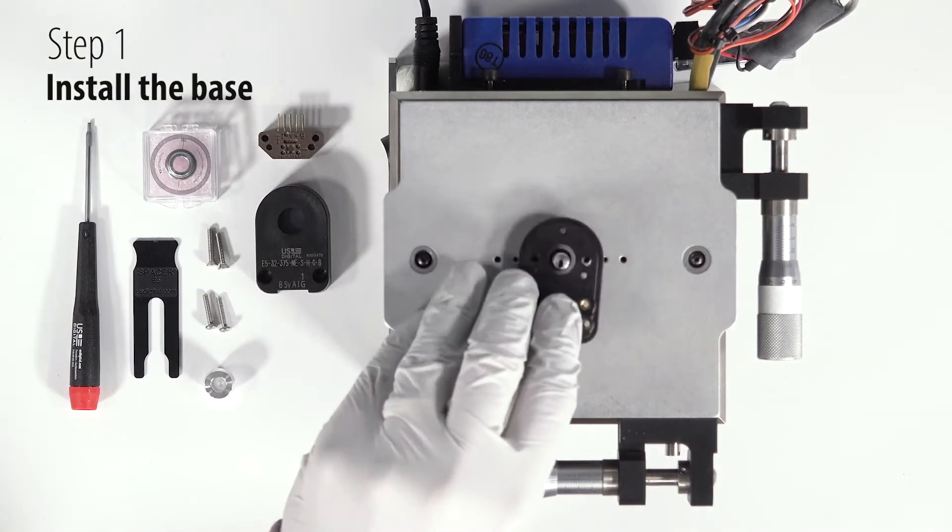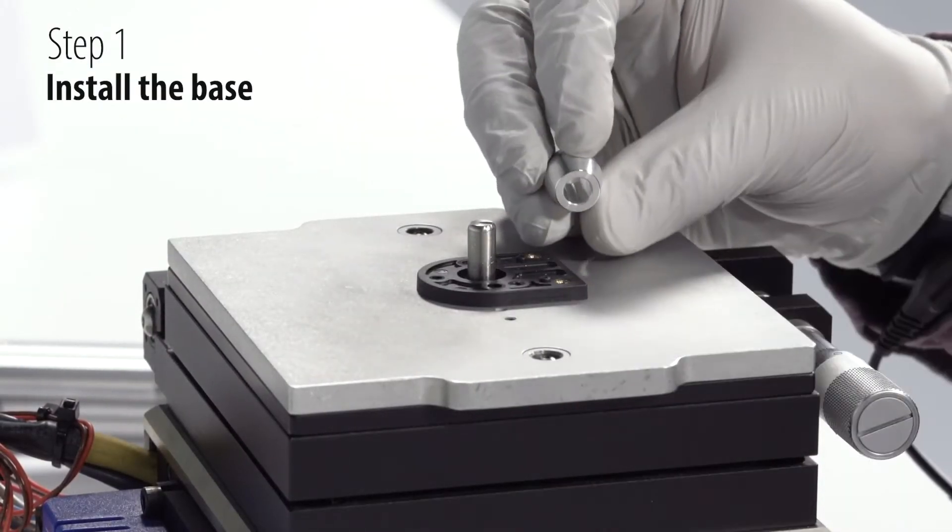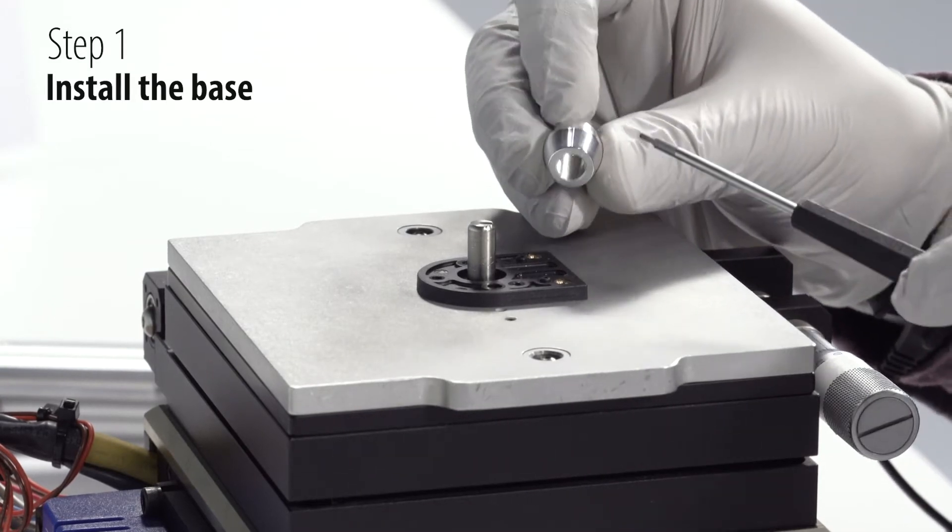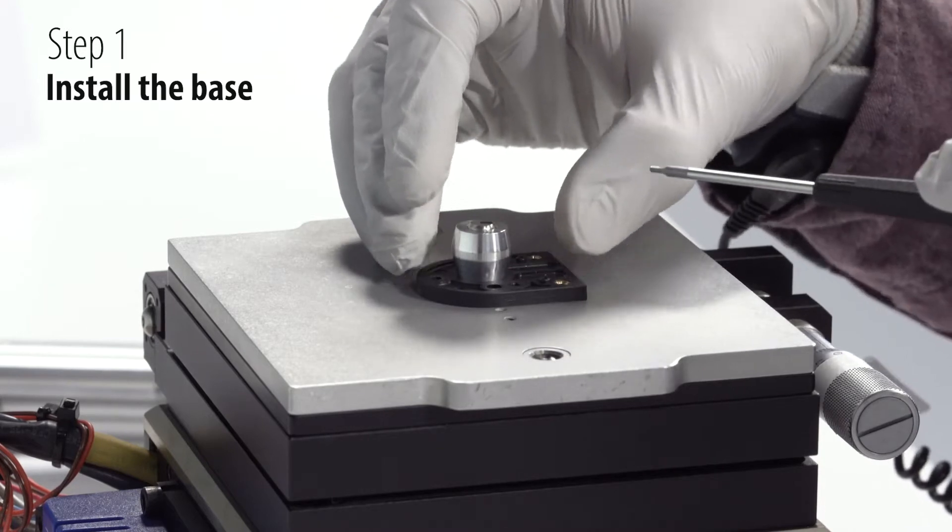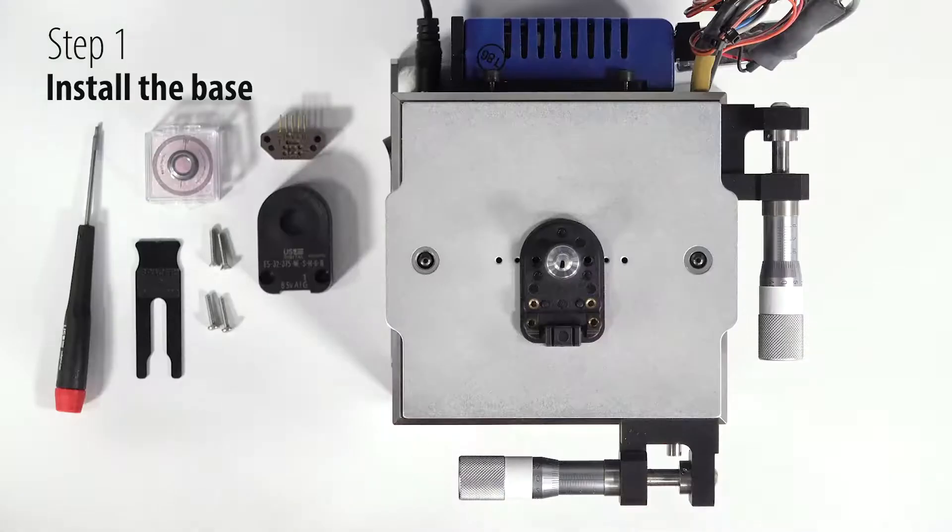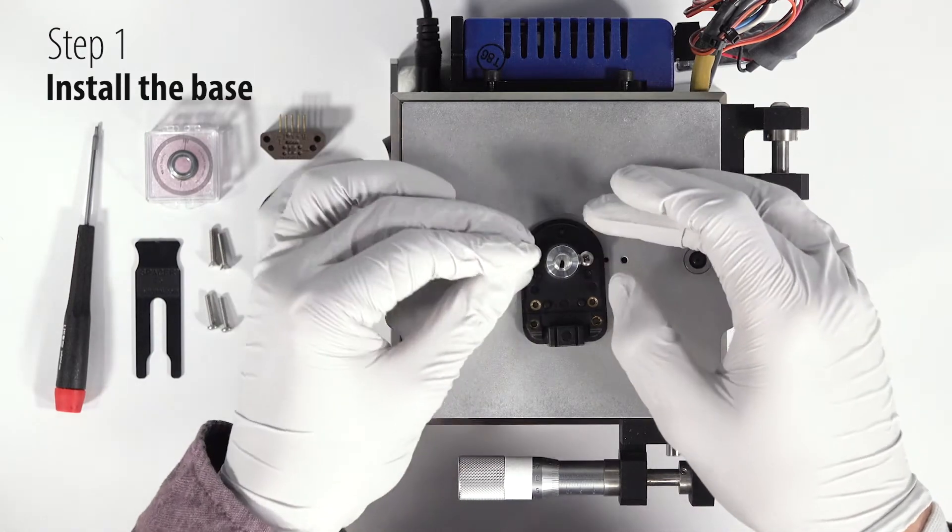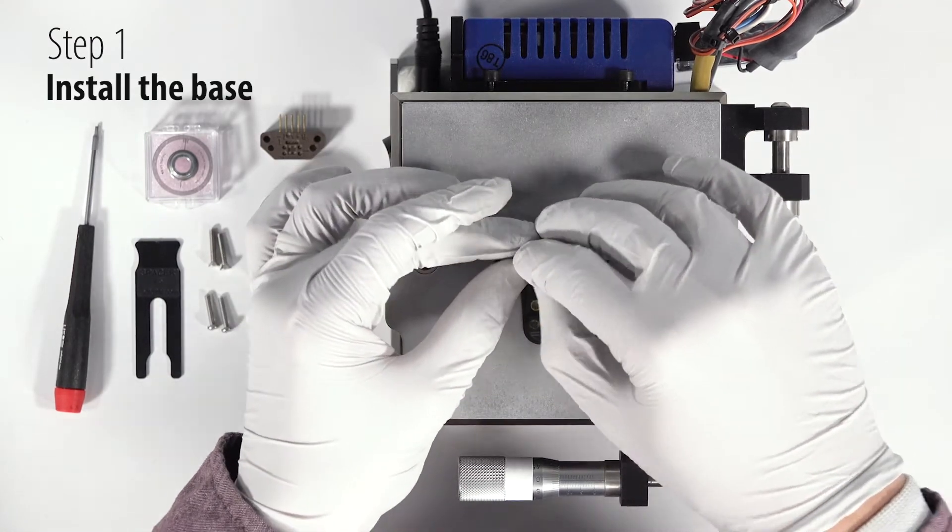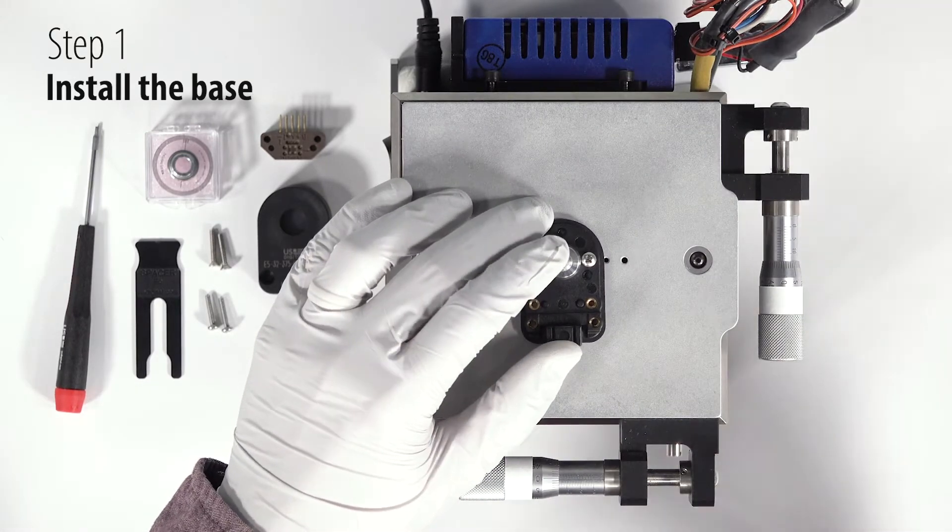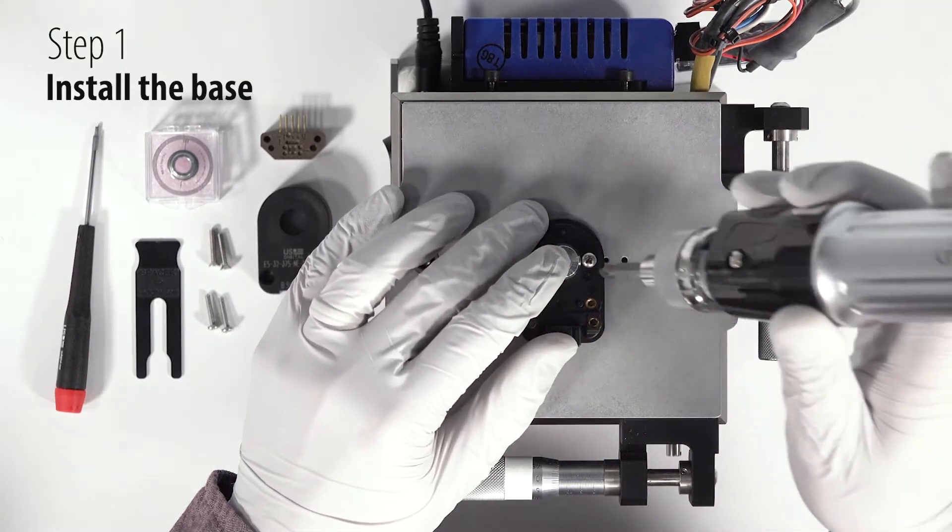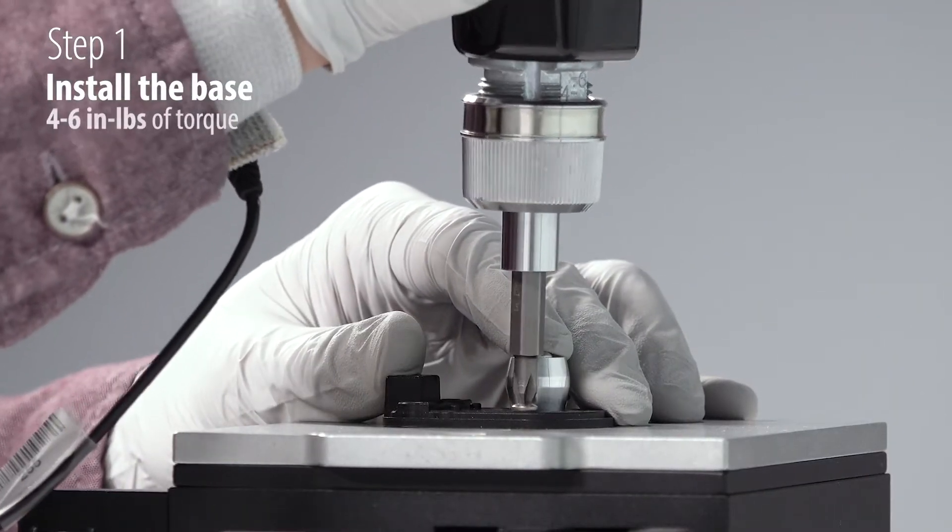For the base plate, we're going to use the centering tool. The smaller end of the tool is going to be slid down on the shaft until it comes in contact with that mounting base. You'll provide your own mounting screws, two or three screws typically, depending on the bolt hole pattern. And then applying light pressure to the centering tool, going to tighten these screws to four to six inch pounds.